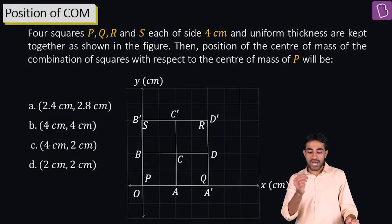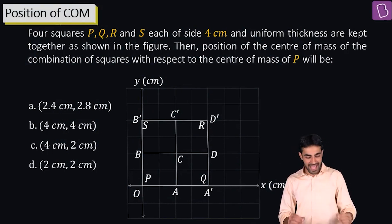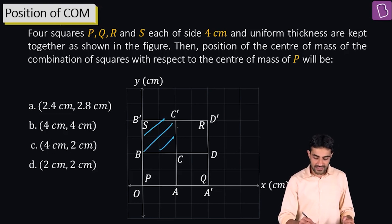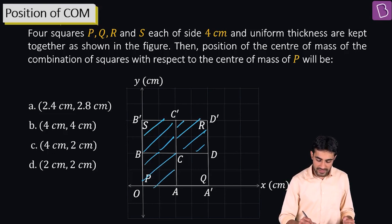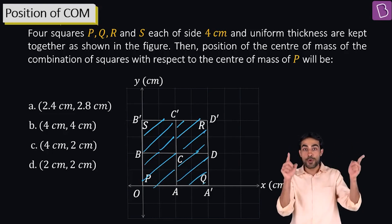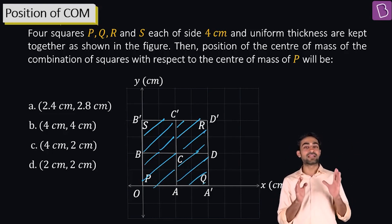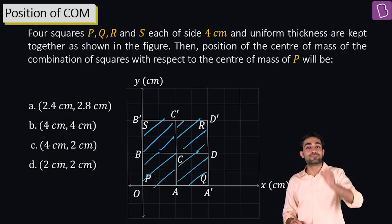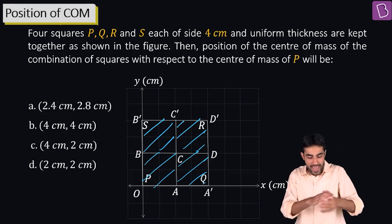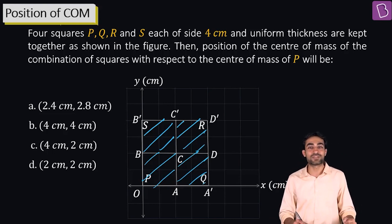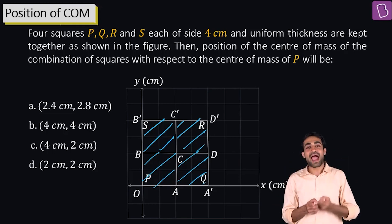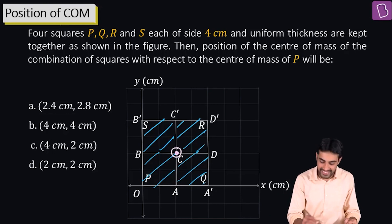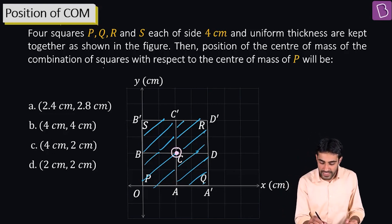4 squares P, Q, R and S, each with sides 4 cm and uniform thickness, are capped together as shown. When combined, they form one large square. We need to find the position of the center of mass of the combination with respect to the center of mass of square P.